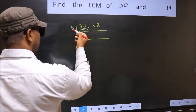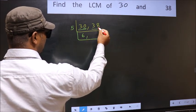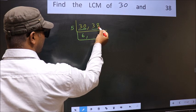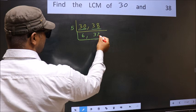When do we get 30 in the 5 table? 5, 6, 30. The other number 38—last digit neither 0 nor 5, so this is not divisible by 5. So we write it down as it is.